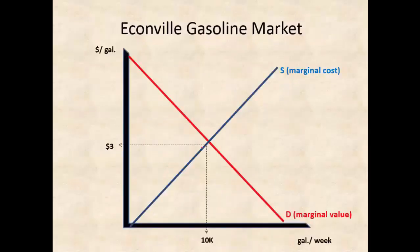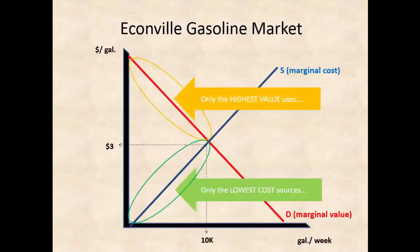We can divide the value or demand curve and the cost or supply curve into two sections at equilibrium. At equilibrium, only high-valued uses are engaged in and they're supplied by the lowest-cost sources of supply. So we're getting the most value for the least cost, and that is the definition of efficiency. We're excluding uses that aren't very valuable and excluding sources of supply that have higher costs.